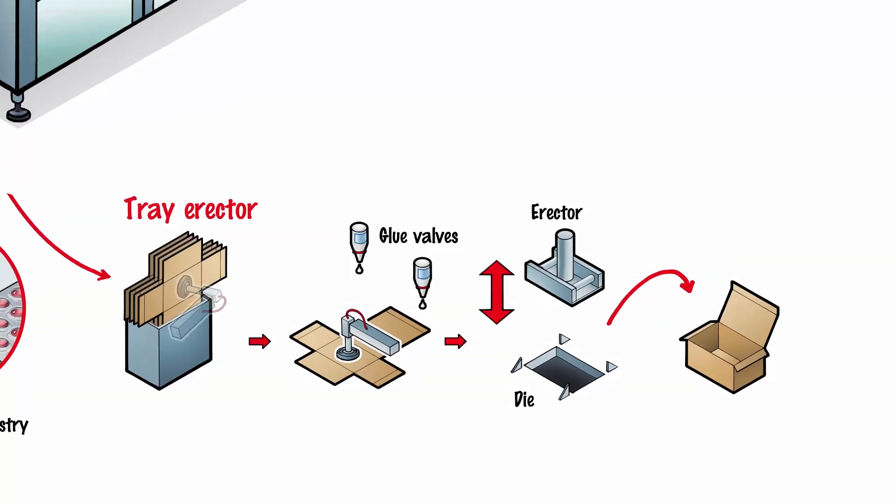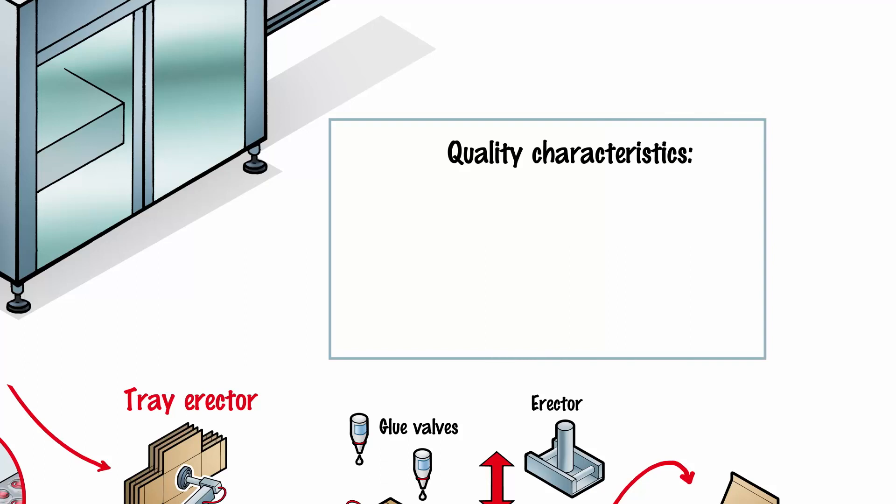There are a number of quality considerations when erecting boxes. For one thing, the glue must be applied with extreme precision to maximize the stability of the box and minimize the amount of glue used. For another, the box must not be damaged.